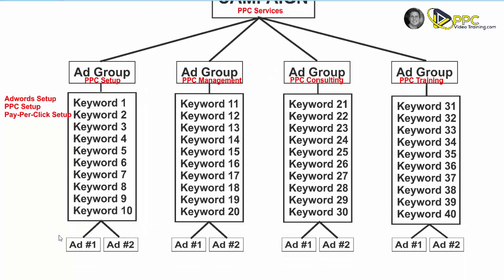At the bottom of each ad group we would have two identifiable ads that encompass all of those particular keywords. We would have one ad that might say something like 'Are you looking for someone to set up your AdWords account? We can help, contact us today.' We would also have a second ad that talks about the same things but is worded a little differently.